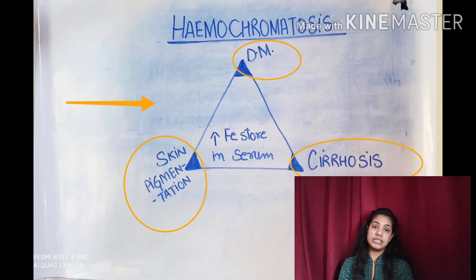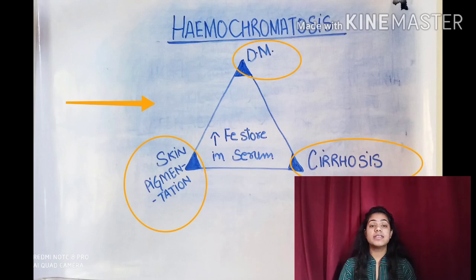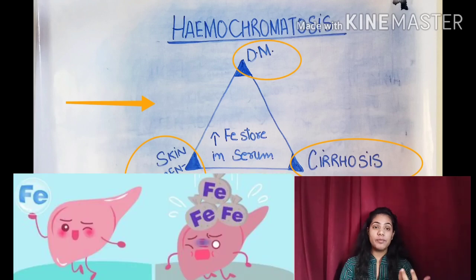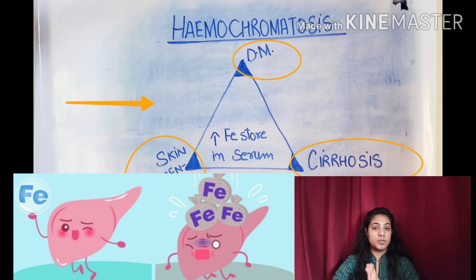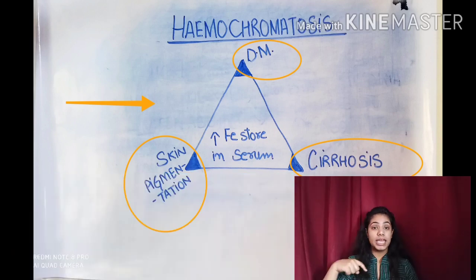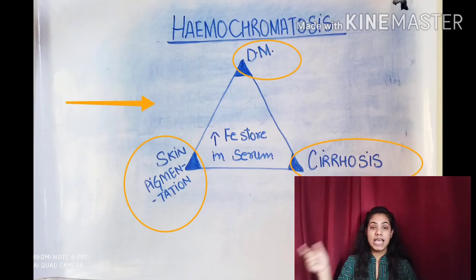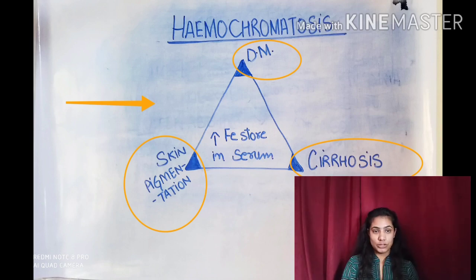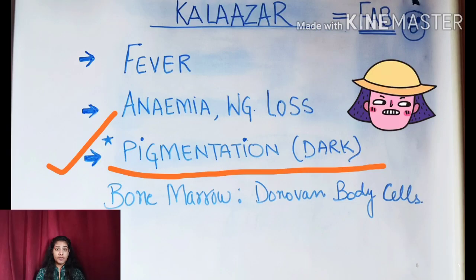So these three features — skin pigmentation, diabetes mellitus, and cirrhosis — will account for hemochromatosis. In hemochromatosis, the serum iron level will be raised above normal. The primary diagnosis will be hemochromatosis, and from that, hepatomegaly will occur secondarily, so treatment will be done accordingly.